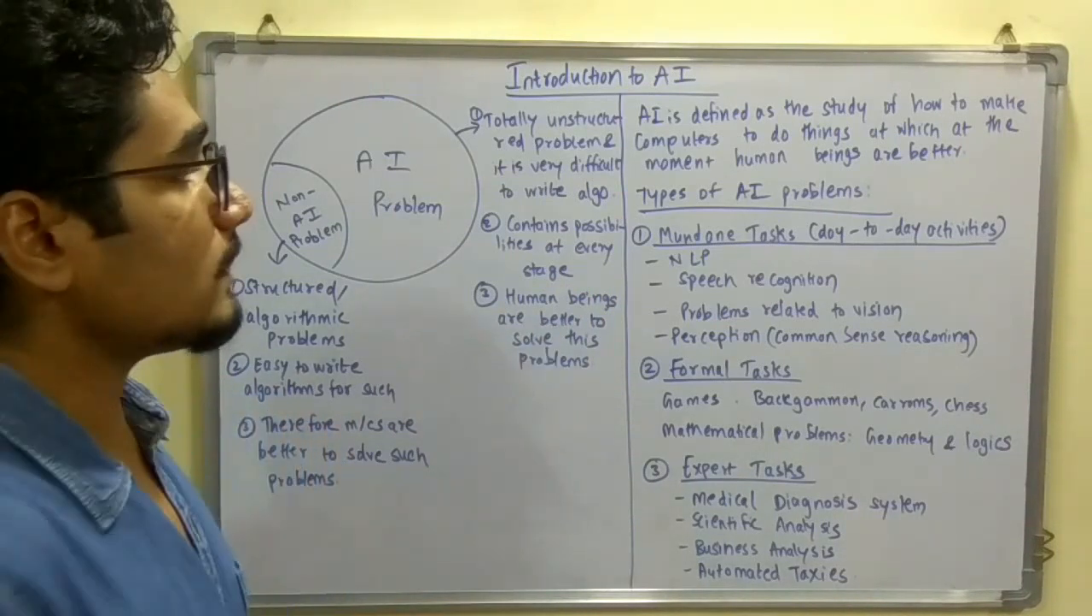Human beings are better to solve these kinds of problems. We define artificial intelligence as the intelligence where human beings have, which we then incorporate into the machines. When they behave like us human beings, they are defined as artificial intelligence. It is the study of how to make computers do things at which at the moment human beings are better. We are incorporating that knowledge of ours into the computers and making them behave like us. Those agents are called intelligent agents, IA.